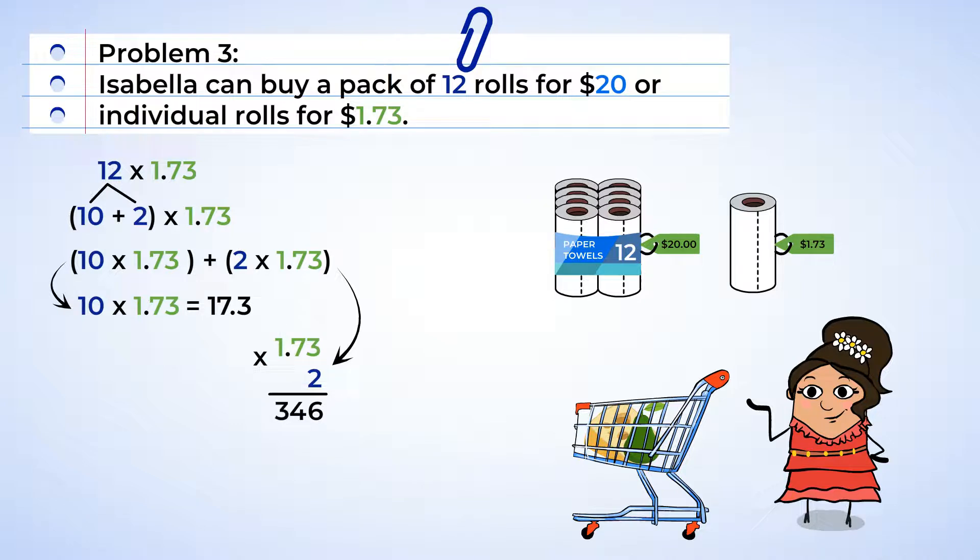And now, where do we place the decimal? Well, looking at our problem, there are two digits to the right of the decimal point. And we want to make sure that there are also two places to the right of the decimal point in the answer as well. Okay, so we put it right there. And we get 3 and 46 hundredths.